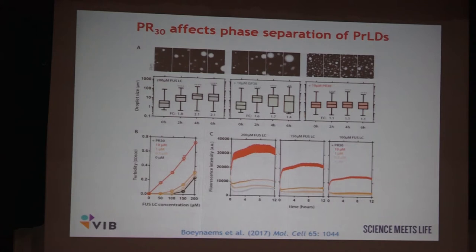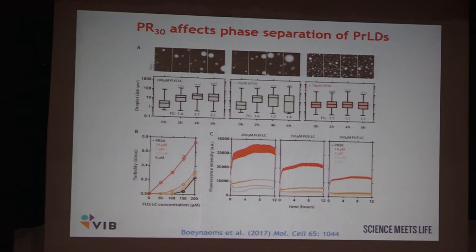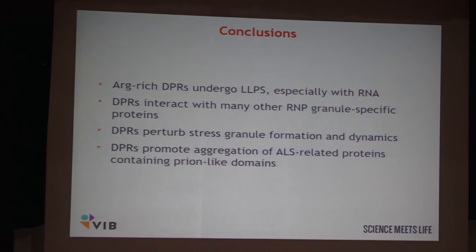Last but not least, by thioflavin T staining we showed that something happens within the droplets that looks like amyloid. When we mix the two proteins together and let the droplets form, then over time something happens in the droplets that is very fluorescent in the presence of thioflavin T. So apparently when DPR30 is highly overexpressed together with FUS, they do mature into a state which is thioflavin T positive, suggesting there might be aggregated fibrillar material in those droplets.